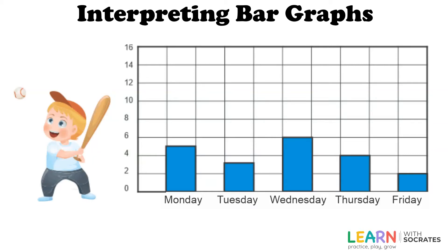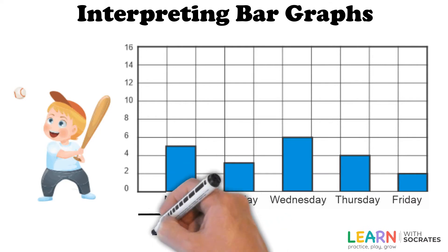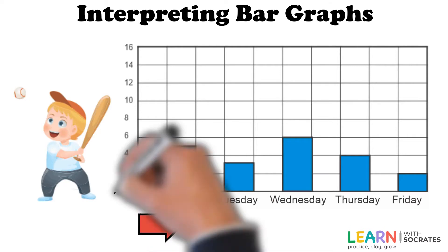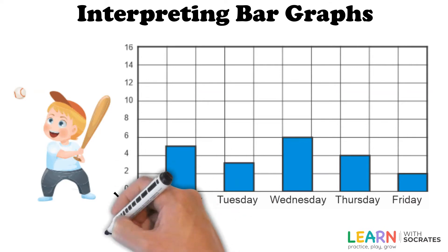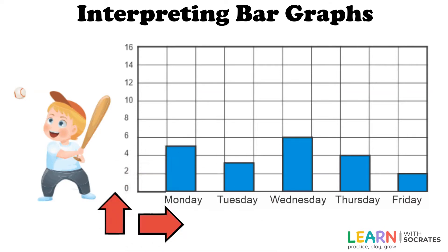Interpreting bar graphs. Look at the bar graph. There's information that goes along the bottom which tells you the days of the week, and that goes up towards the top which tells you the number of times. Bar graphs always have information on both sides.